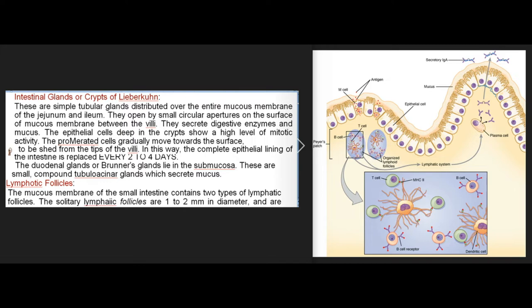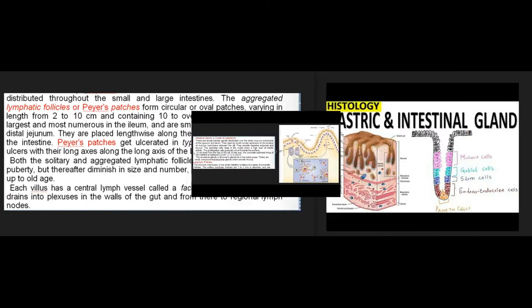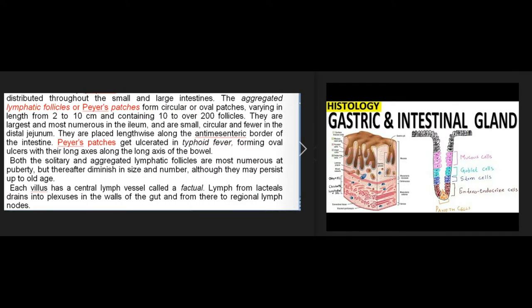The mucous membrane of the small intestine contains two types of lymphatic follicles. The solitary lymphatic follicles are one to two millimeters in diameter and are distributed throughout the small and large intestines. The aggregated lymphatic follicles, or Peyer's patches, form circular or oval patches two to ten centimeters long, containing ten to over two hundred follicles. They are largest and most numerous in the ileum and fewer in the distal jejunum. Peyer's patches get ulcerated in typhoid fever, forming oval ulcers with their long axis along the long axis of the bowel.